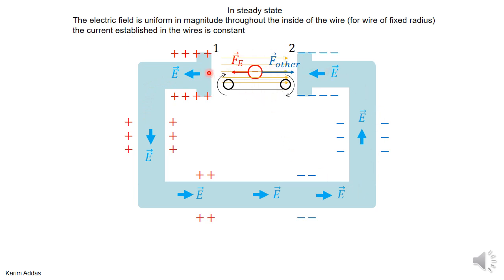The current keeps going as long as the battery is able to move charges from one side to the other. The battery moves negative charges through the circuit in a complete revolution, continuously. This video gives an intuitive understanding of how an electric field is established inside a circuit — something not many textbooks discuss clearly — specifically how it's produced due to surface charges and non-uniform charge distribution on the surface of the wires.